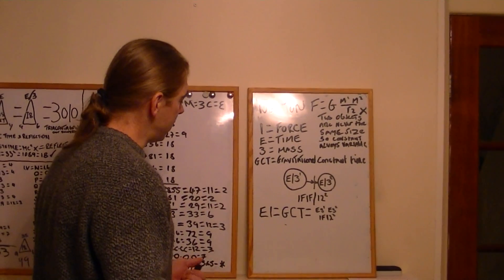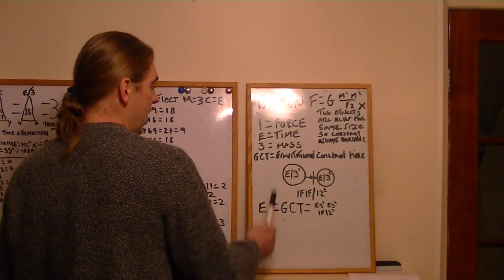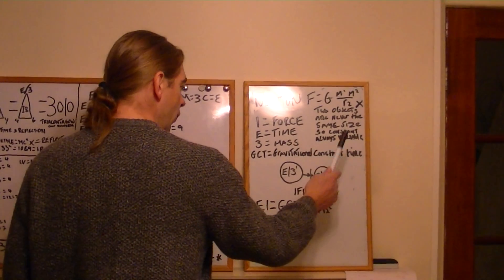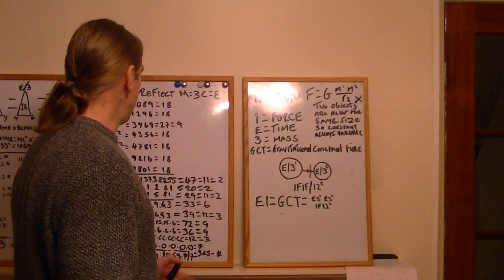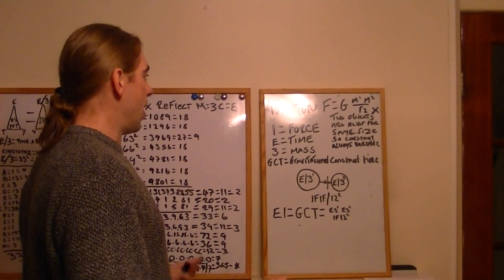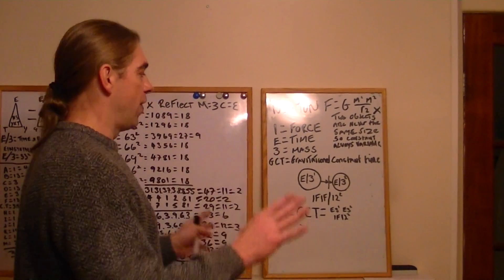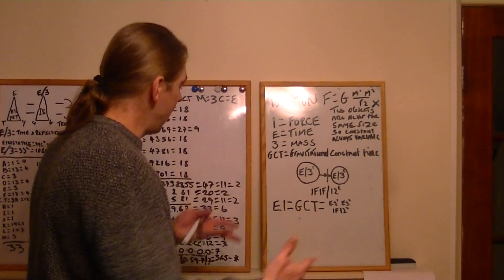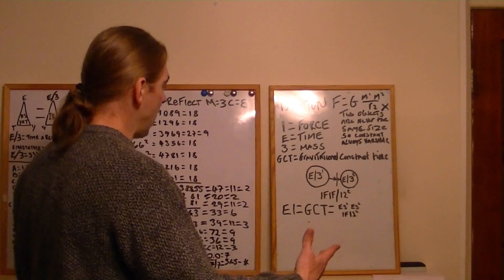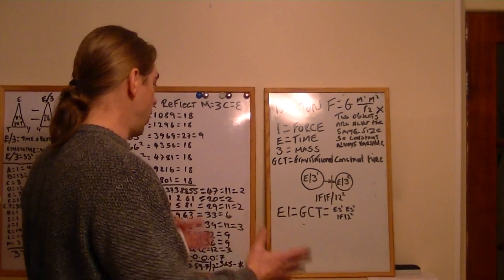3 equals mass. And GCT equals gravitational constant time. Now, I've showed you before how things work in reflection. Everything you see in front of you is a reflection. Once you understand this, you can turn around the letters and the numbers to find their true meanings.